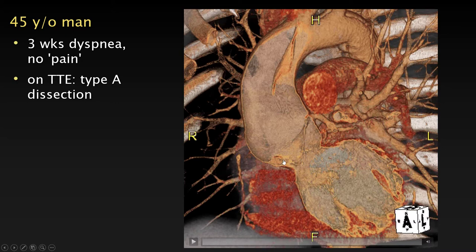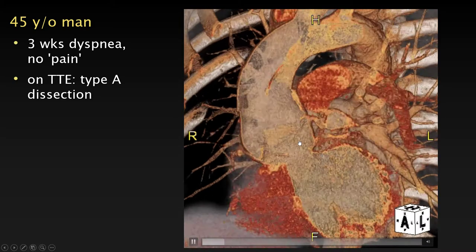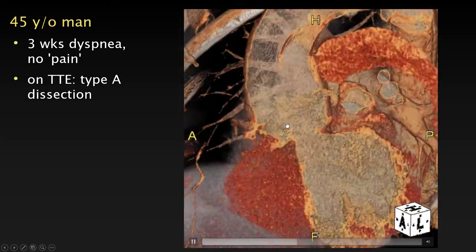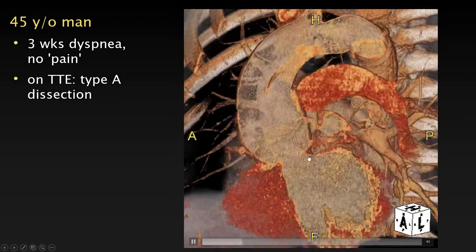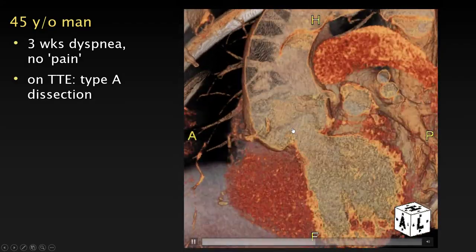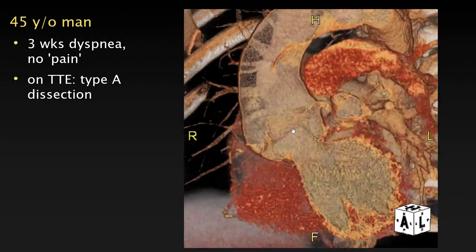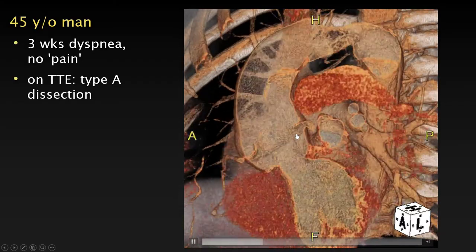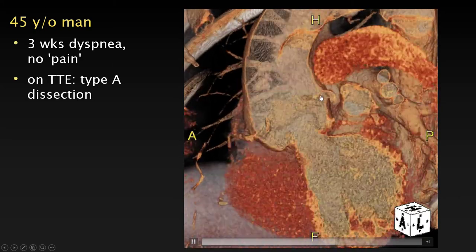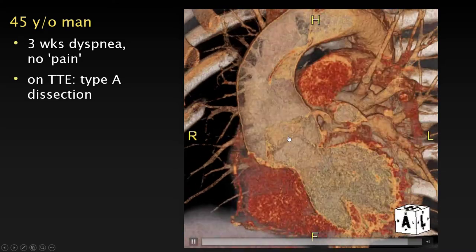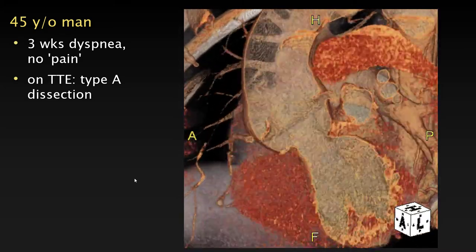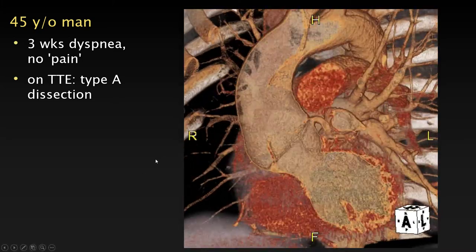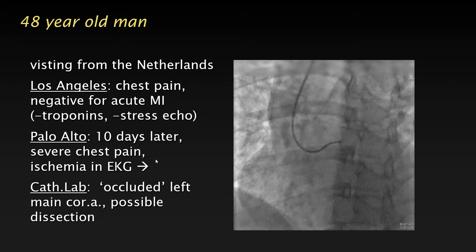It's even better seen in 4D because you can see that the large flap moving up and down is truly a dissection flap — the tissue that connects to the rest of the dissection — and not the valve, because the aortic valve is clearly visible separately. While you can probably make the diagnosis without 4D, it also allows you to tell the surgeon exactly where the dissection flap begins relative to the left main and right coronary arteries, helping plan whether to repair only the ascending aorta or also the root and valve.